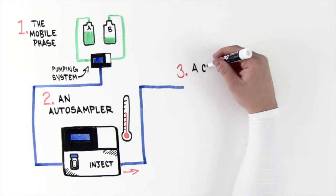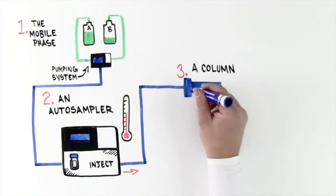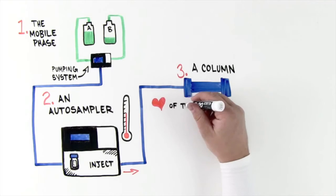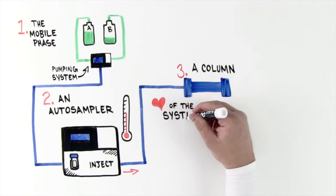3. A column. The column is packed with a stationary phase that separates the sample. A non-polar silica-based phase is the most common phase for reversed-phase HPLC.